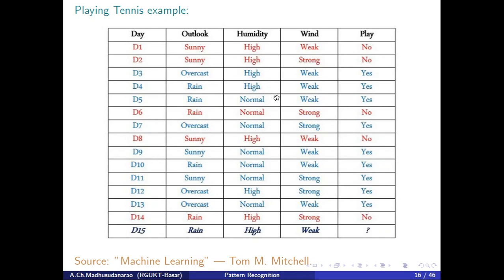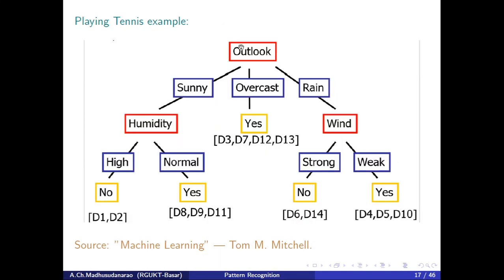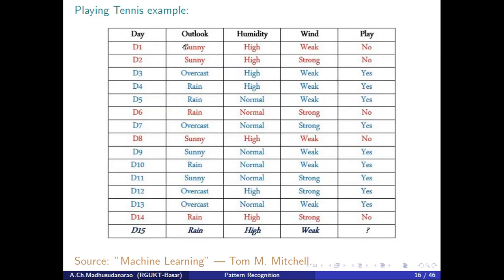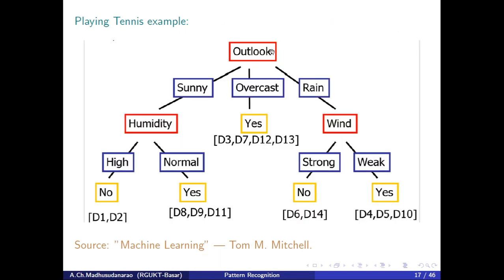We have 14 training samples. 'No' corresponds to class 2, 'yes' corresponds to class 1. If I consider outlook as the root node — out of the three features — and ask: what is the outlook? If the answer is overcast, then I will play tennis without any doubt.